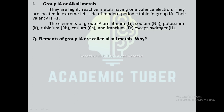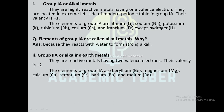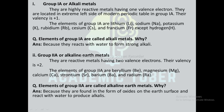Elements of group 1A are called alkali metals because they react with water to form strong alkalis. Group 2A or alkaline earth metals: they are reactive metals having two valence electrons and their valence is +2. The elements of group 2A are beryllium, magnesium, calcium, strontium, barium, and radium. The elements of group 2A are called alkaline earth metals because they are found in the form of oxides on the earth's surface and react with water to produce alkalis.